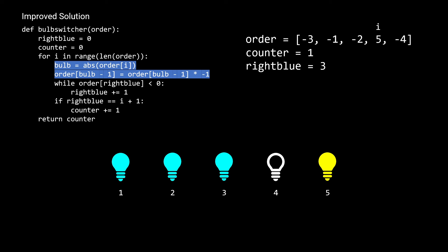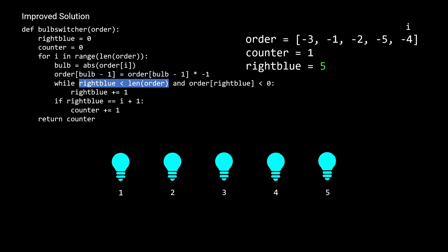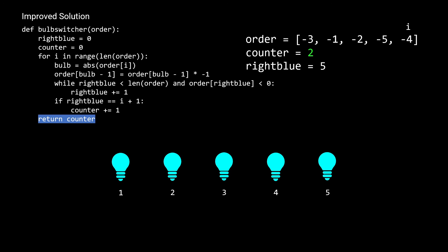On the third iteration, we turn the second bulb on and mark it negative, causing the second and third bulb to turn blue. The while loop iterates twice — order[1] and order[2] are negative but order[3] is not — so right_blue becomes 3. The if statement passes since right_blue equals i+1, and we increment counter from 0 to 1. We then turn on the fifth bulb — the while loop and if statement fail. We turn on the fourth bulb, causing bulbs 4 and 5 to turn blue. The while loop increments right_blue twice, but we add a bounds check to prevent an index-out-of-bounds error. The if statement passes and we increment counter from 1 to 2, which is our final answer.